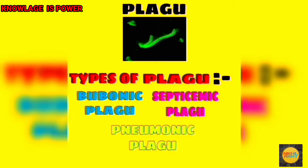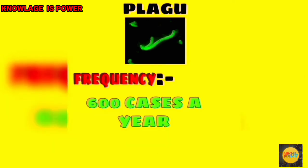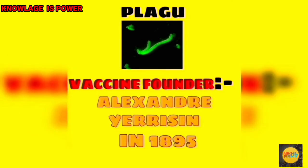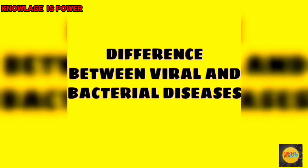The three types of plague are bubonic plague, septicemic plague, and pneumonic plague. Bubonic plague started in 1346 and ended in 1353. Septicemic plague started in 1348 and ended in 1350. Pneumonic plague started in 1910 and ended in 1911. The frequency of plague is 600 cases a year, and the vaccine founder is Alexandre Yersin in 1895 from France.